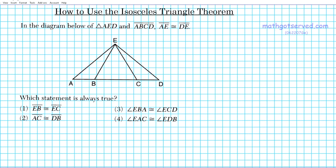What we're going to do is use the information given in this question to narrow down our possibilities. We're told that in this triangle, ABCD is a segment, and AE is congruent to DE. So let's mark that: AE, this segment, is congruent to DE.